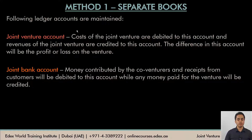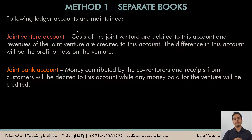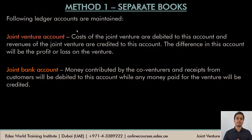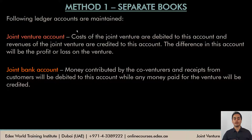Apart from the joint venture account, a joint bank account is maintained because co-venturers pool their money into a separate bank account in the name of the joint venture. This joint bank account records all inflows and outflows of money in the joint venture business.